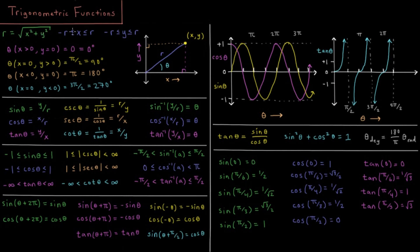The maximum magnitude of r can be the magnitude of x or the magnitude of y. Because we always have the other coordinate squared in there, and both of these are positive numbers, so r can't be any bigger than the magnitude of x or y. So x and y have to be between negative r and positive r.